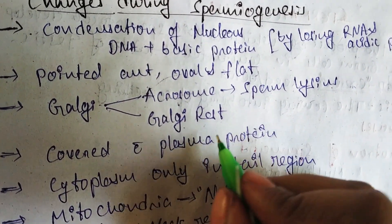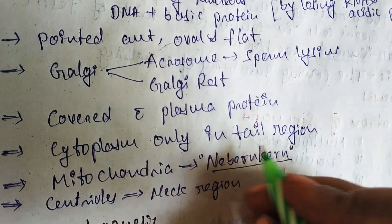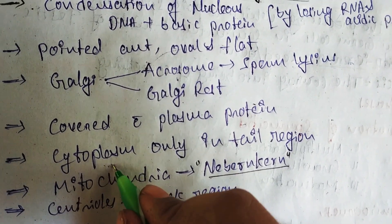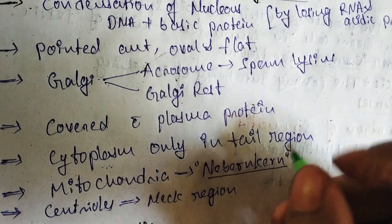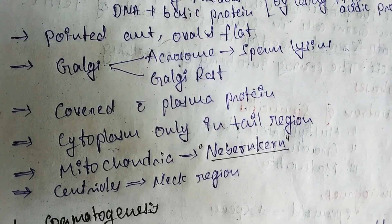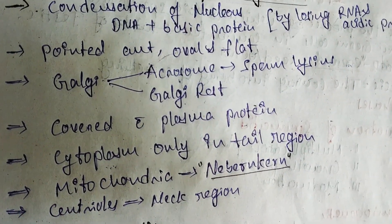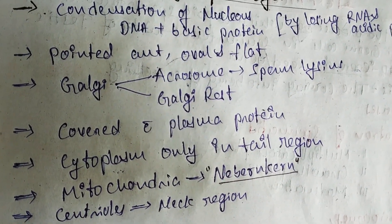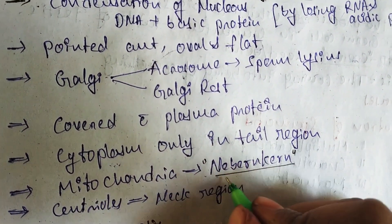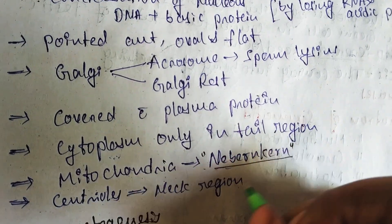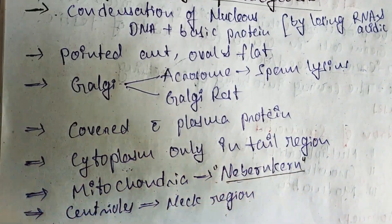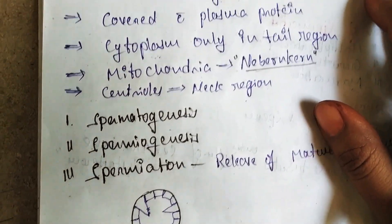At fertilization, the enzyme lysin is released from the acrosome to penetrate the ovum. The total sperm is covered with plasma protein. However, cytoplasm is present only in the tail region of the sperm. Centrioles are present in the neck region of the sperm.